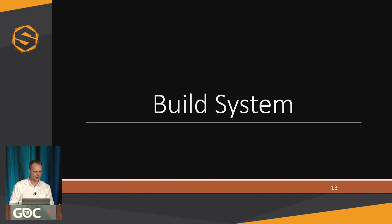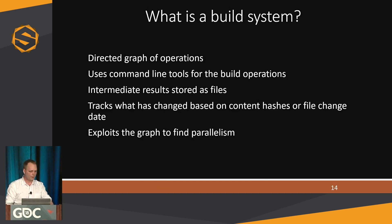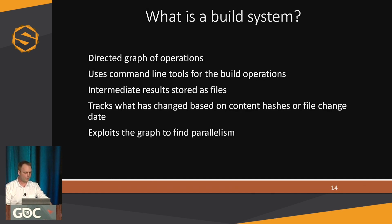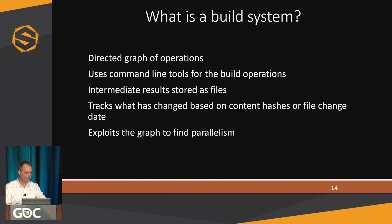For people familiar with these type of processes, this all sounds like a build system. It's basically a directed graph of operations. It allows you to express the pipeline — implementing different build operations as command line tools, storing intermediate results as files, knowing what depends on what, and exploiting the directed graph to find parallelism. If you do a change to one file, anything downstream that depends on that file will also need to be updated, and the system can keep track of that for you.